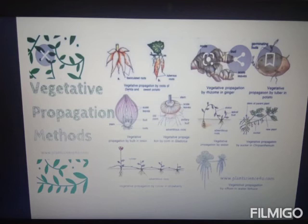Rhizome is an underground flattened and horizontally growing stem possessing internodes, scale leaf buds, and adventitious roots. Example: ginger. A tuber is an underground stem modified into a solid, fleshy, round or oval shaped structure showing eyes which represent nodes bearing scale leaves and buds. Example: potato.